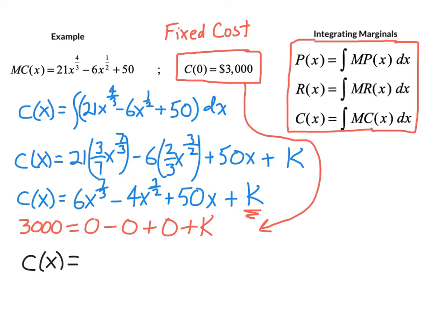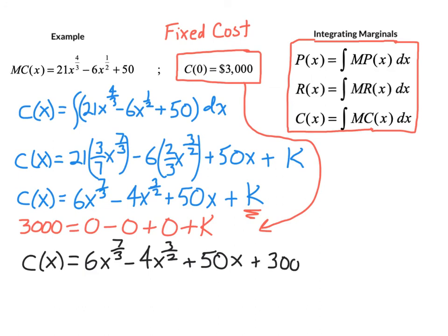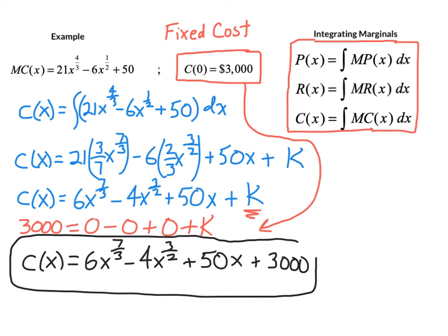Now we can write the particular solution with that known constant term. We can go confidently with the cost function: 6x to the 7/3 minus 4x to the 3/2 plus 50x plus 3000. Any time you need to use an antiderivative to solve a real problem, there has to be one known value on that function. In this case it was the fixed cost at x = 0. Without that, you can't get beyond the general solution and can't answer particular questions.